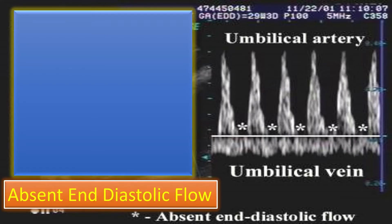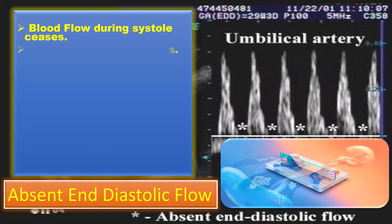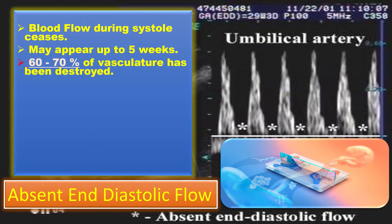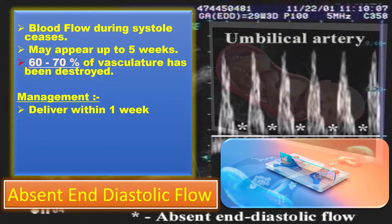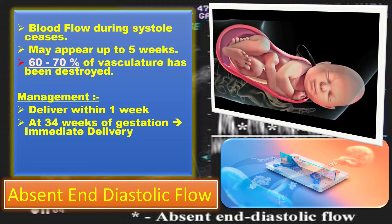Coming to absent end-diastolic flow: blood flow during diastole ceases, and it may appear up to five weeks after reduced diastolic flow. Absent diastolic flow means 60 to 70% of the vasculature has been destroyed. Management: we need to consider delivery within a week. At 34 weeks of gestation, consider immediate delivery. If the patient is at less than 34 weeks, give steroid cover and then deliver.